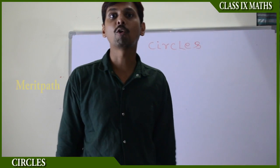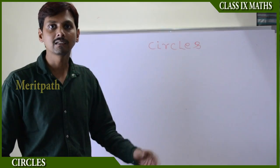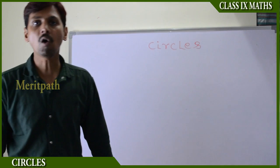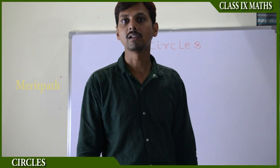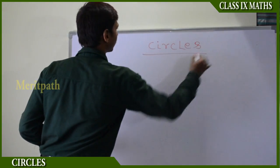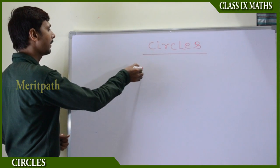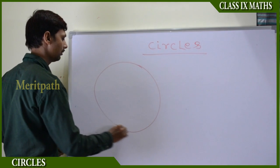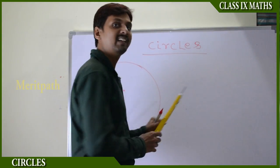We have seen so many things around the world that are bubbles, bangles, pizzas, and beans. These all appear like a round figure, that is called a circle. A circle can be drawn freehand or using a compass with a fixed point.